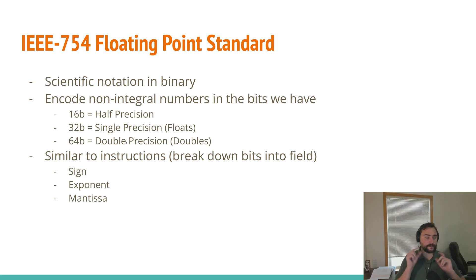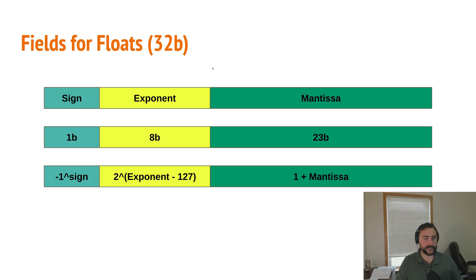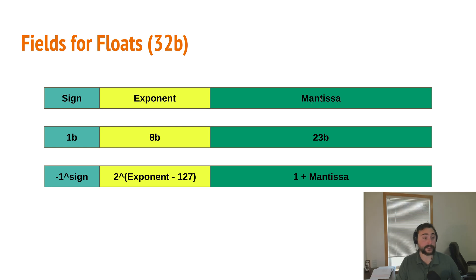We're going to break down these bits into fields just like we did for our instructions. Some bits represented our opcode, others represented register operands. In this case, we're going to use different bits to represent our sign, our exponent, and our mantissa or significand. For 32-bit single precision numbers: at the most significant bit we have our sign bit, which is a single bit; then we have our exponent bits, which are 8 bits; and then our mantissa, which is 23 bits, going down to our least significant bit.